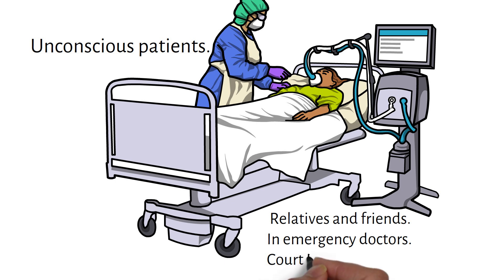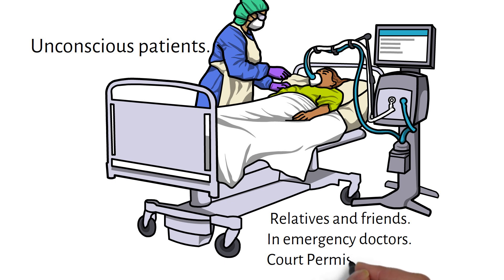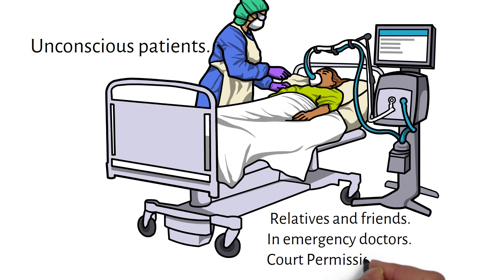In rare situations where a person is felt to lack capacity and there are no family or friends available, or the family and friends are not able to make the decision, help can be sought from a court of law for permission, or to get an advanced decision through power of attorney.